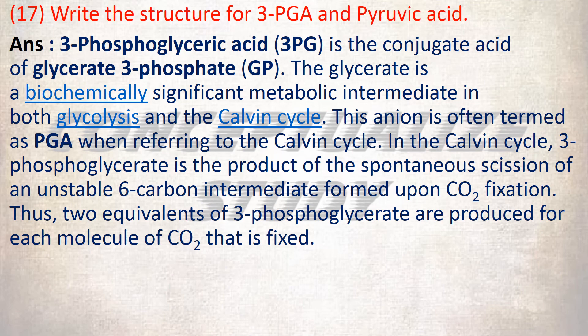The next question is: write the structure for 3-PGA and pyruvic acid. 3-phosphoglyceric acid (3-PGA) is the conjugate acid of glycerate 3-phosphate, which is a biochemically significant metabolic intermediate in both glycolysis and the Calvin cycle. In the Calvin cycle, 3-phosphoglycerate is the product of the spontaneous scission of an unstable 6-carbon intermediate formed upon carbon dioxide fixation, and two equivalents of 3-phosphoglycerate are produced for each molecule of carbon dioxide that is fixed.